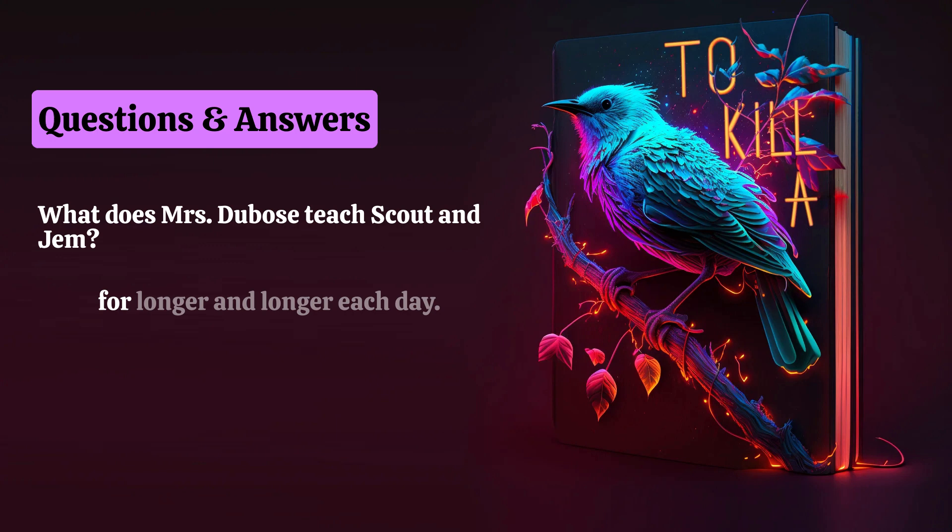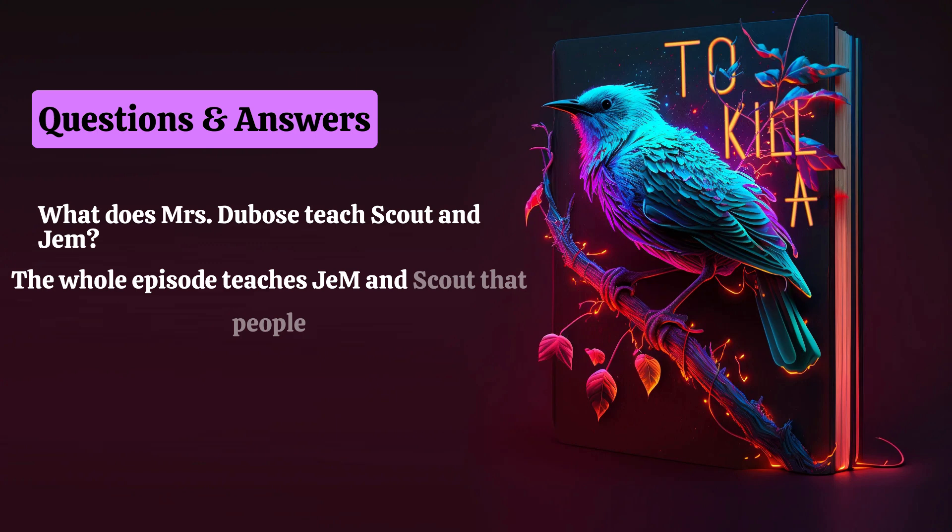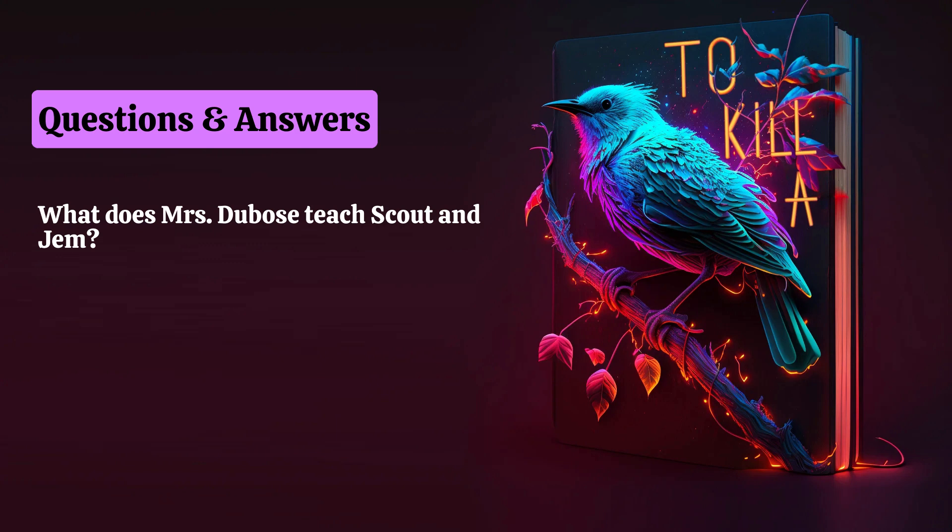When she dies a month later, Atticus tells Jem that she was the bravest person he ever knew. The whole episode teaches Jem and Scout that people are not always what they appear to be and that even despicable people can have heroic qualities.